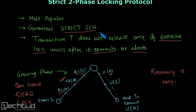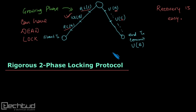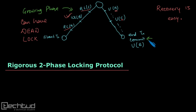Now let's look at rigorous two-phase locking protocol. Rigorous 2PL is a bit of an enhancement over the restriction in strict 2PL. In strict 2PL, once the shrinking phase begins, we do not unlock items that were locked with an exclusive lock until the transaction is committed — exclusive locks are unlocked only after commit, generating a strict schedule.